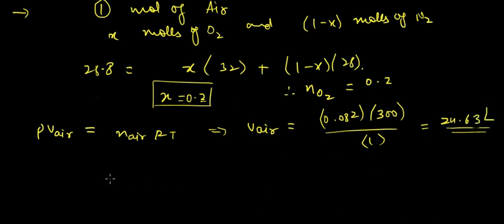Hence molarity in terms of oxygen would be 0.2 upon 0.1367. You can calculate this. So we come to an end of this lecture. In the next lecture we will be seeing typical concentration terms. Till then, good luck and goodbye.